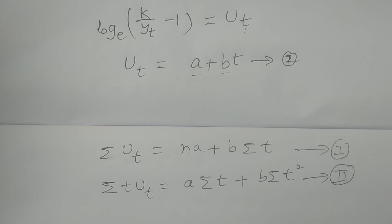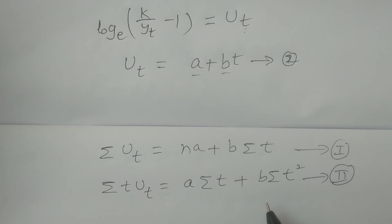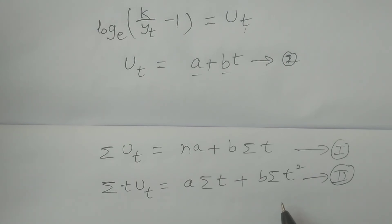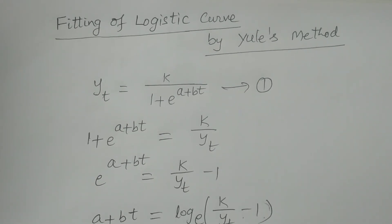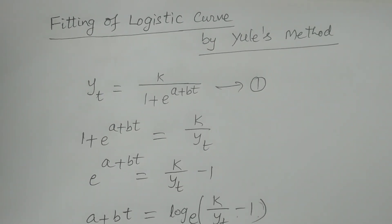The straight line can be obtained by fitting using the principle of least squares method. We can obtain the values of a and b by solving these normal equations. With the values of a, b, and k — where k should be obtained by any other method — equation number one gives the best fit of the logistic curve. This is the method of fitting a logistic curve by Yule's method. Thank you very much.